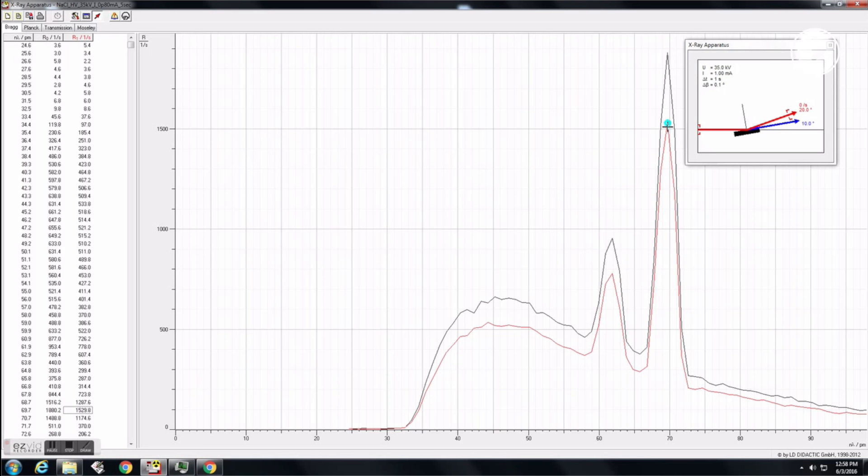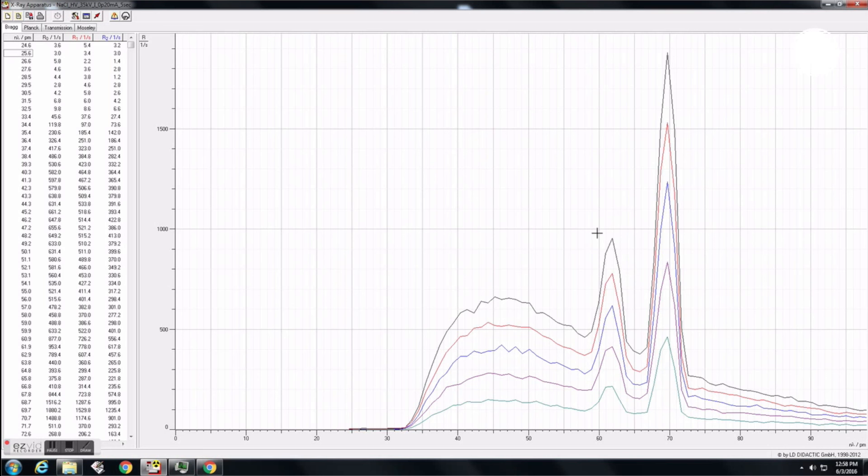Return the tube to 35 kV, and now take data for tube currents of 0.8, 0.6, 0.4, 0.2 mA. The graph here shows the overlay of spectra for all 5 current setups.